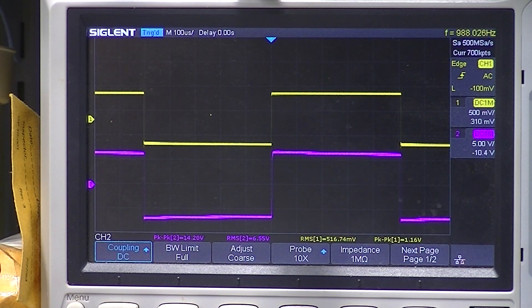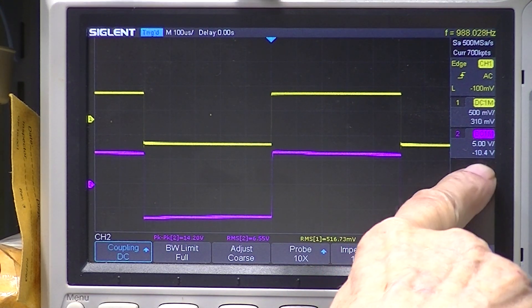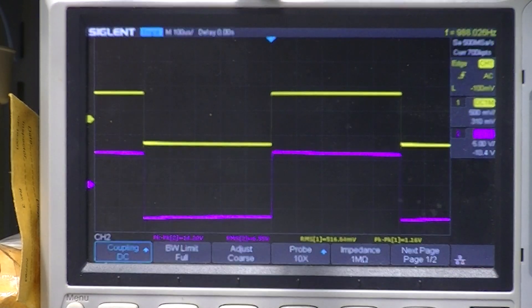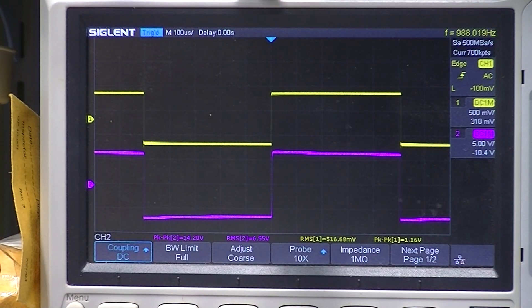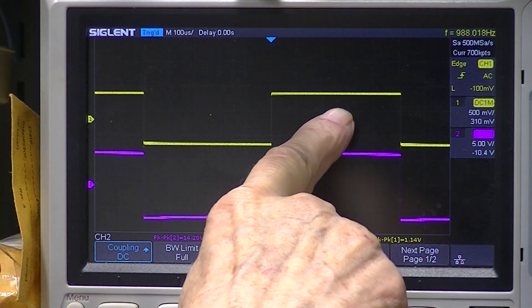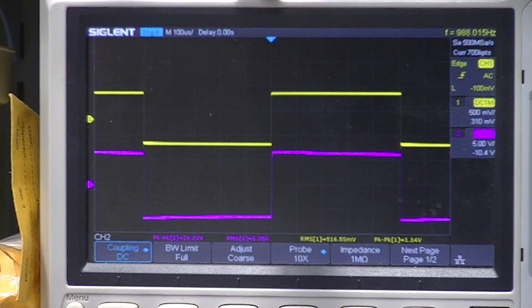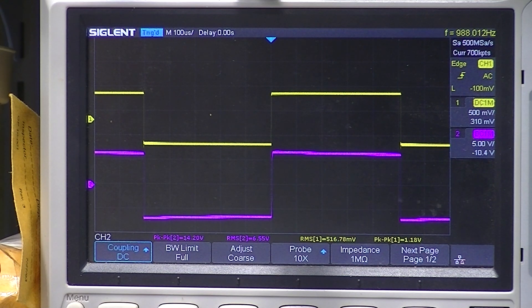So I would say across an 8 ohm load, 10.4 volts is about the maximum output, and 300 millivolts peak-to-peak is about the maximum input.